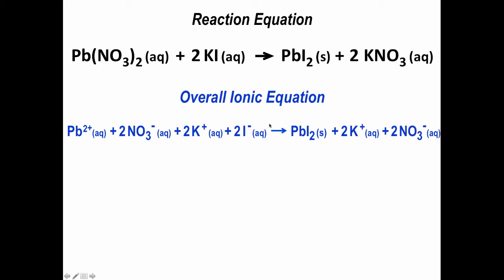And what we note in an overall ionic equation for a precipitation reaction is that we have ions, in this case nitrate and potassium, that start as ions floating around in solution, aqueous, and end up as ions floating around in solution, aqueous. In other words, they don't really react or change.